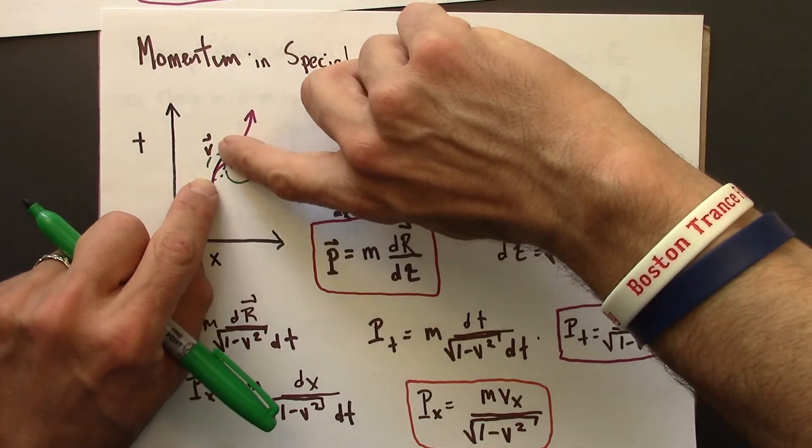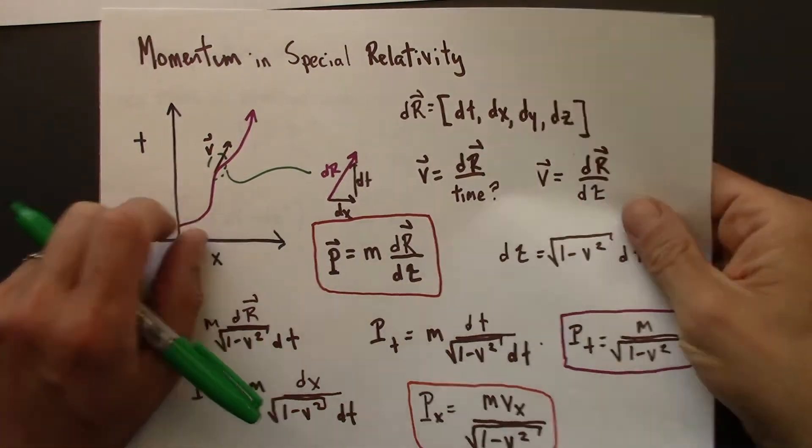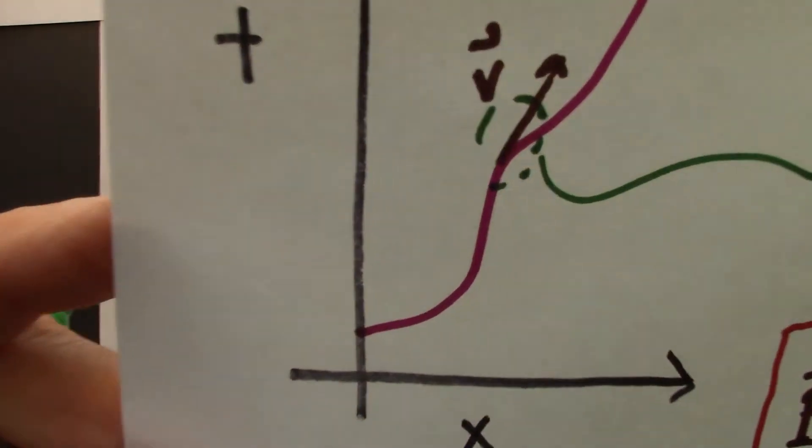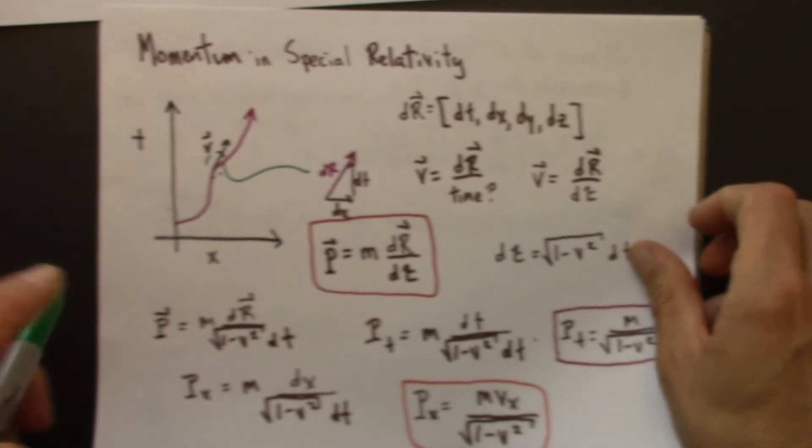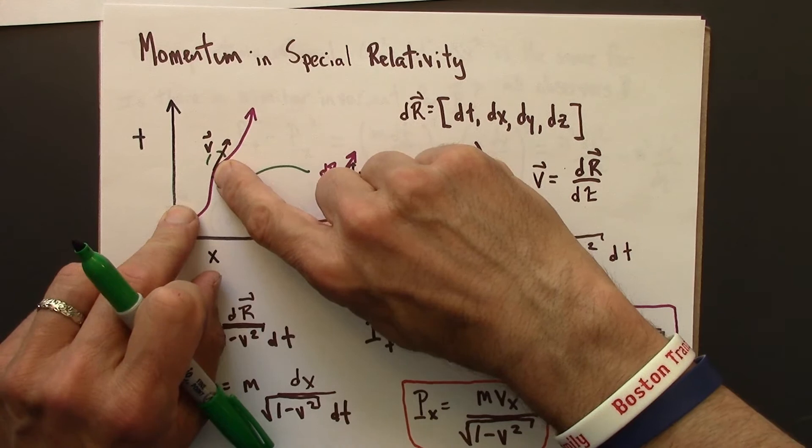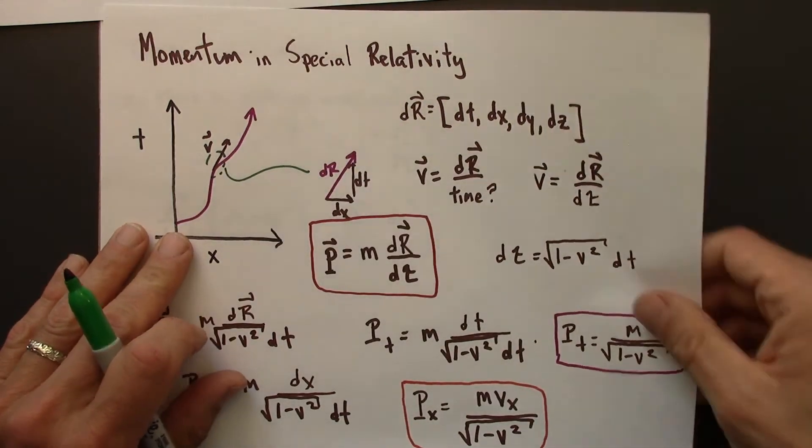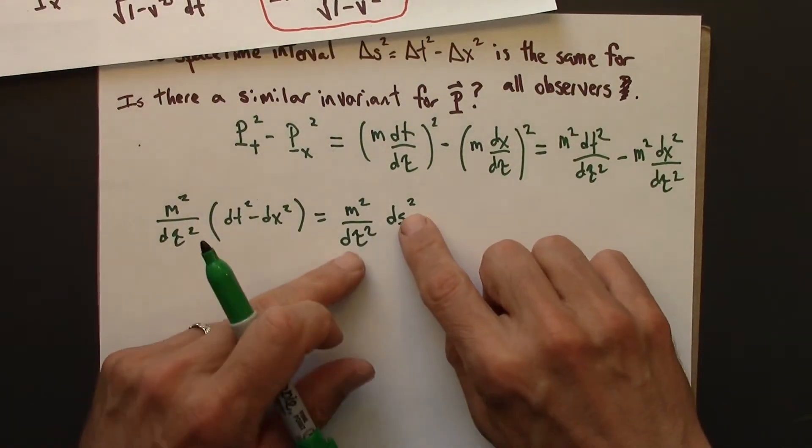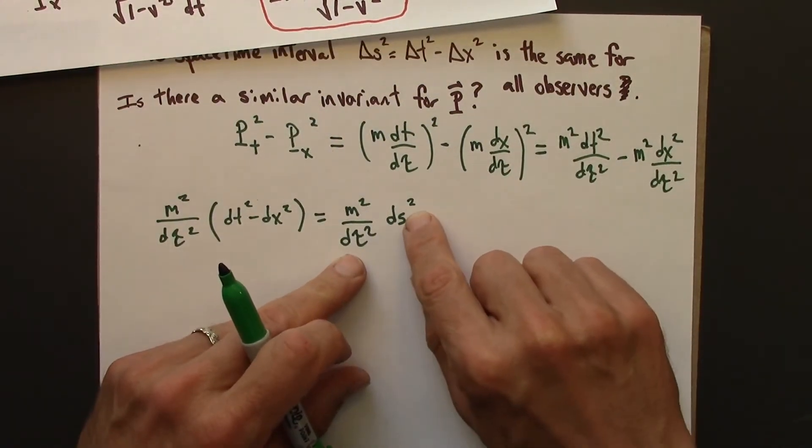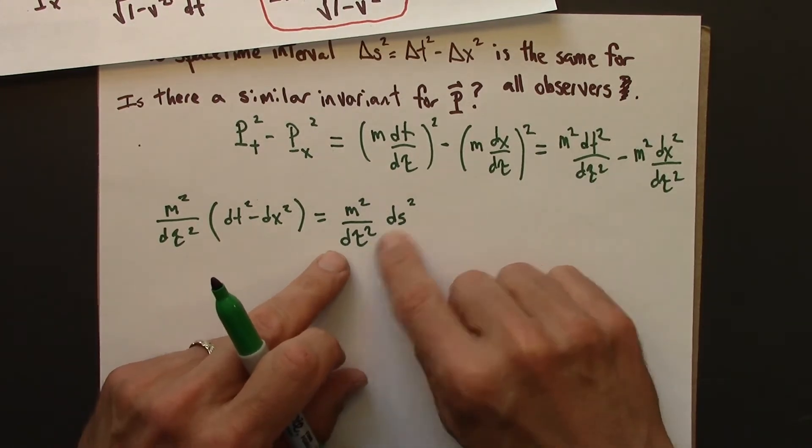But if I zoom in on a tiny little region of this, that curve starts to look straighter and straighter. And so for a very small step along this curve, the clock is essentially inertial, and therefore the spacetime interval is indeed a proper time.